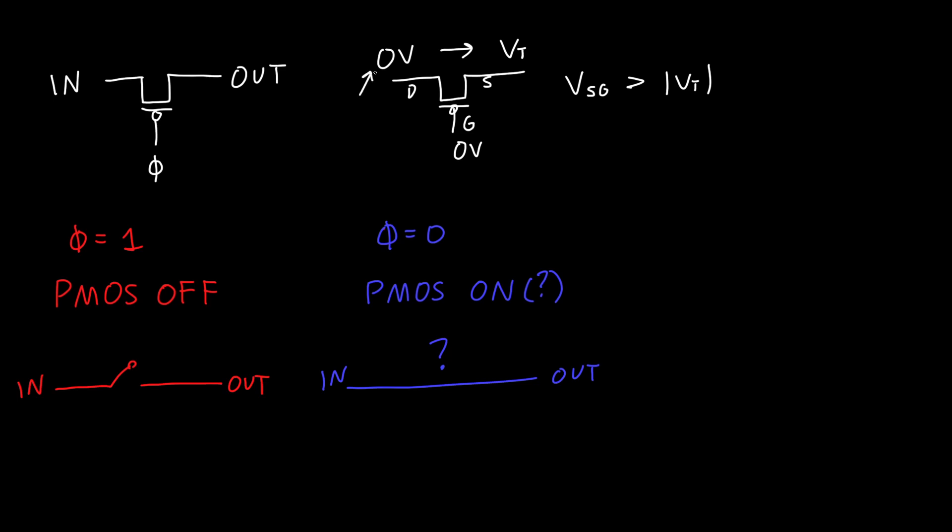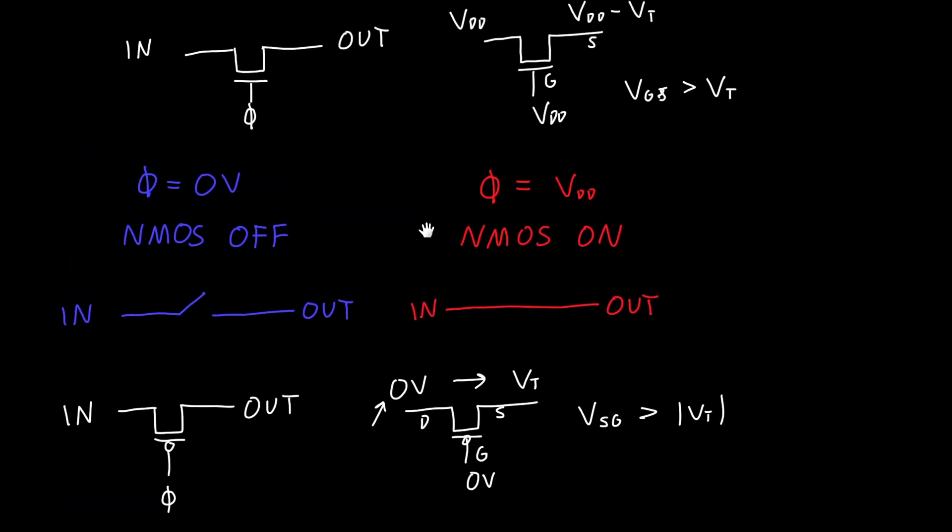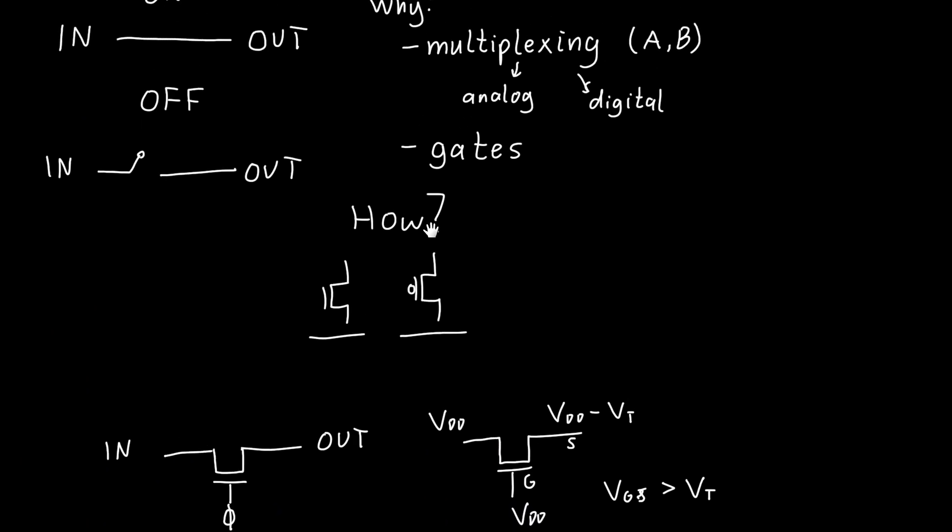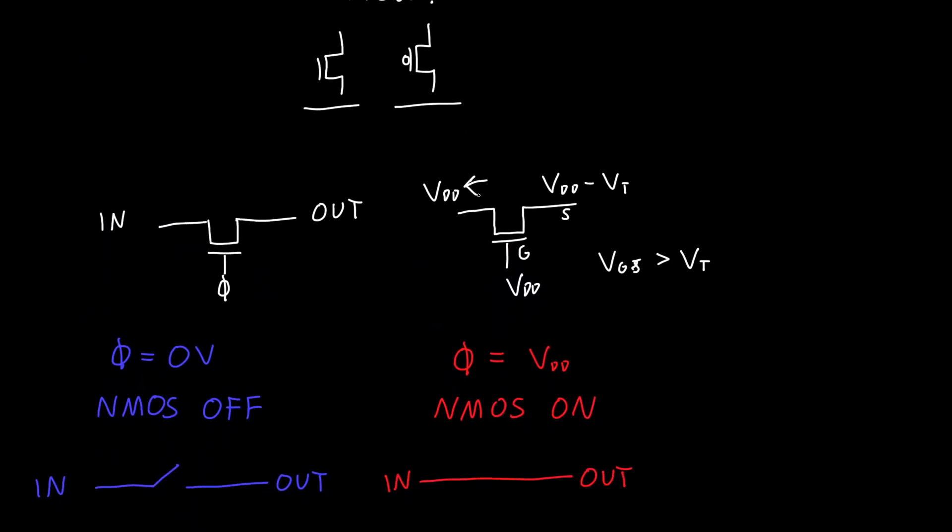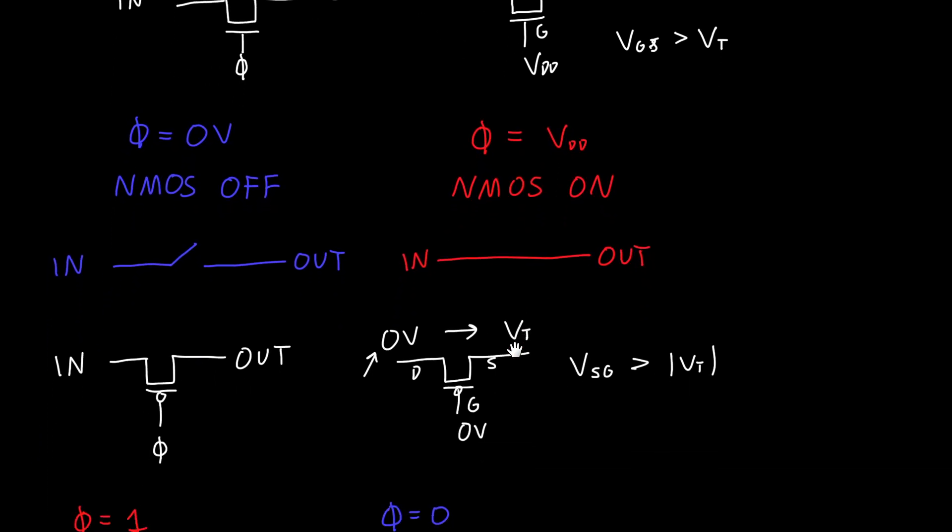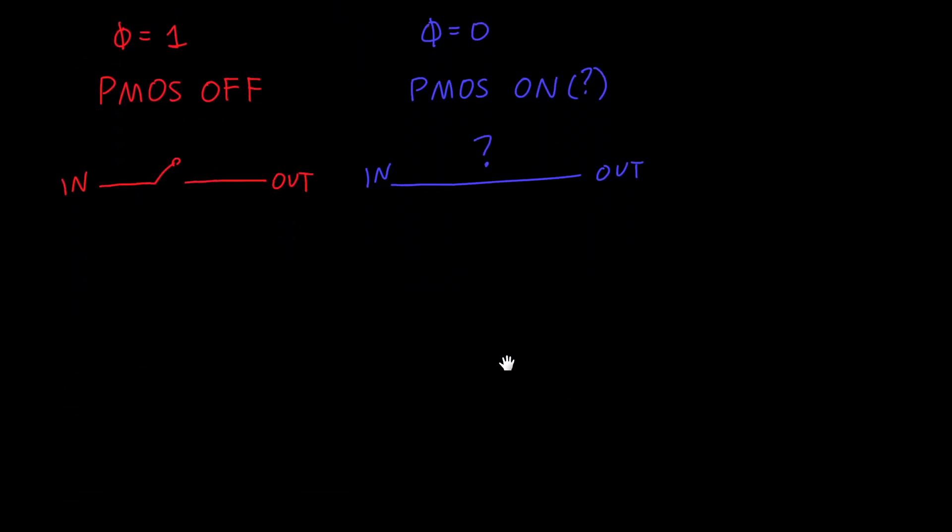And so you might have seen, well, if a PMOS really sucks at passing zero volts and an NMOS isn't very good at passing VDD, then if we combine them, they should be able to overcome each other's shortcomings. And indeed that is the case.